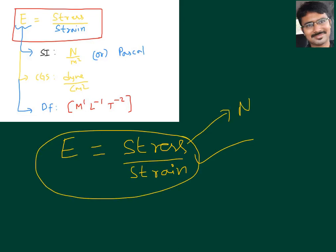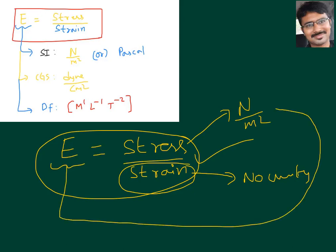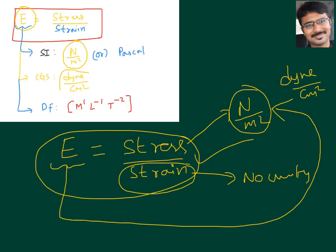Coming to units: stress SI units are Newton per meter squared. Strain has no units at all. So modulus of elasticity has the same units as stress — Newton per meter squared in SI, and dyne per centimeter squared in CGS. Since the units are the same, we can say the dimensional formula is also the same as stress.